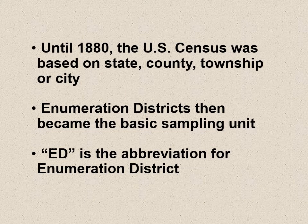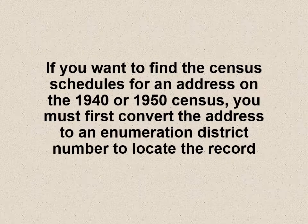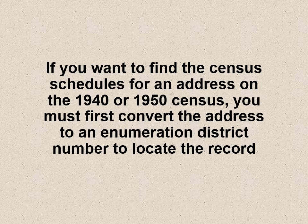Until 1880, the U.S. Census was based on state, county, township, or even city areas. But starting in 1880, enumeration districts became the basic sampling unit, abbreviated ED. If you want to find the census schedules for an address on the 1940 and 1950 census, you must first convert your address to an enumeration district number in order to locate the record. You can do that either by maps or by the One-Step method.